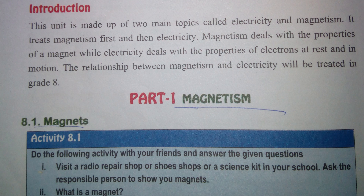While electricity deals with the properties of electrons at rest and in motion. The relationship between magnetism and electricity will be treated in a later part.